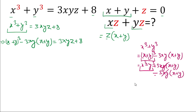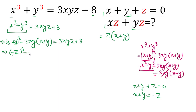Now, from x + y + z = 0, the value of x + y is −z. So we substitute x + y = −z into the equation: (−z)³ − 3xy(−z) = 3xyz + 8.